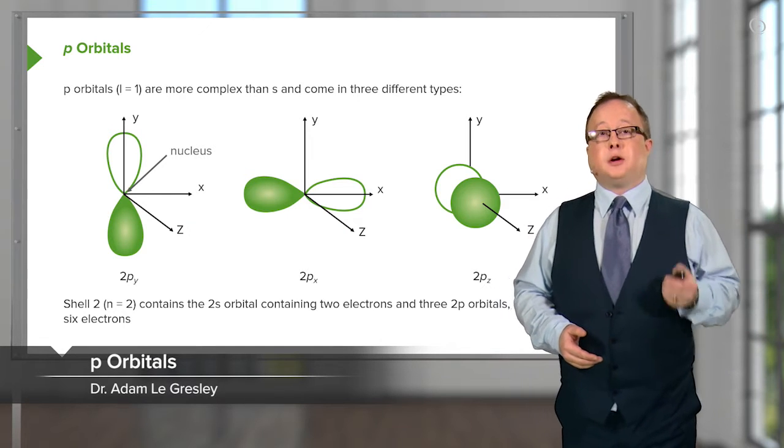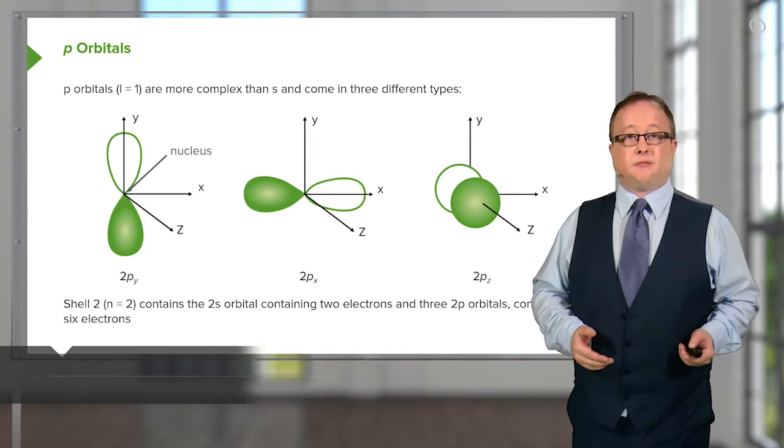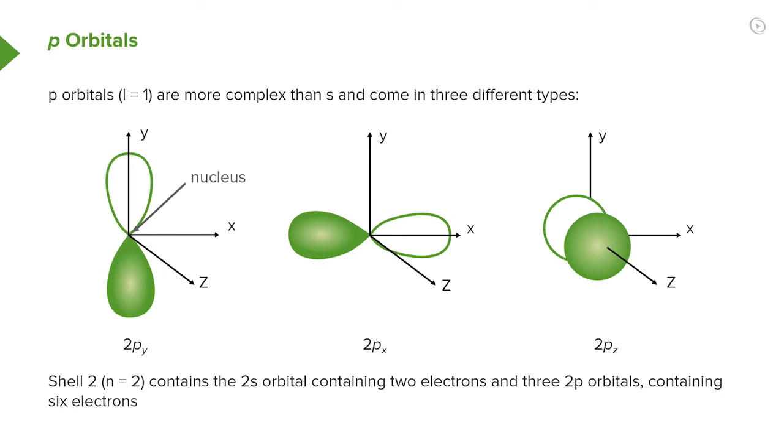P orbitals, these are principal orbitals, and this is where you have an orbital quantum number of 1, or L equals 1, are more complex.